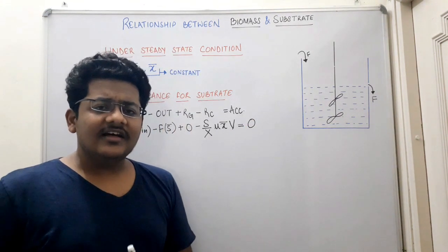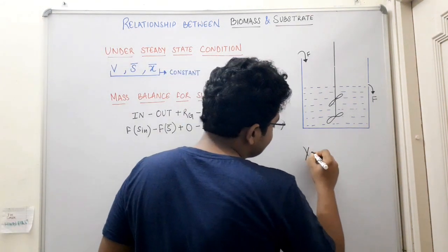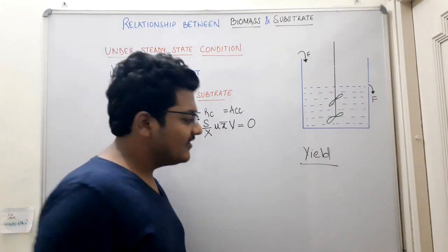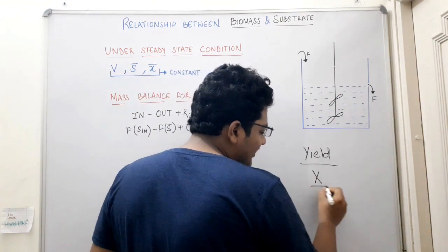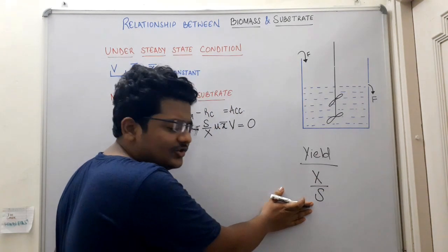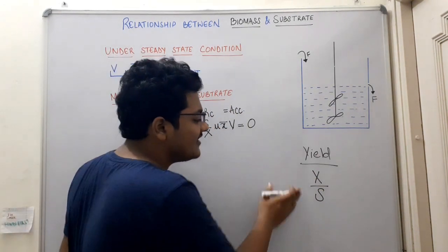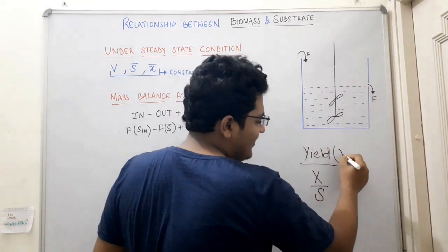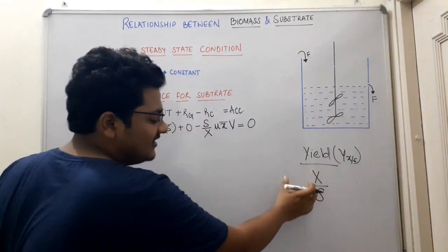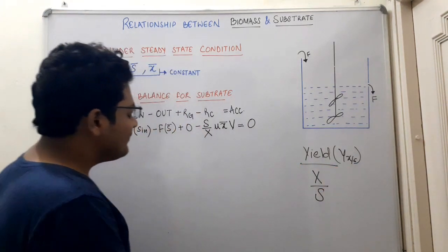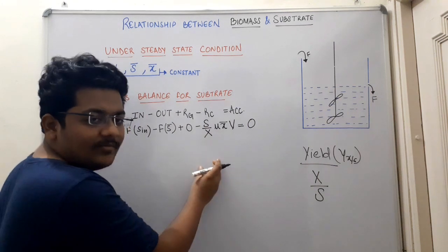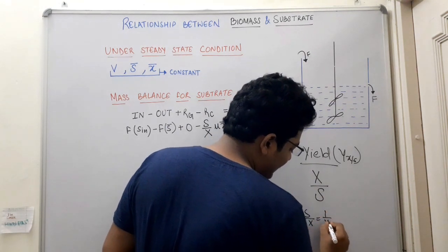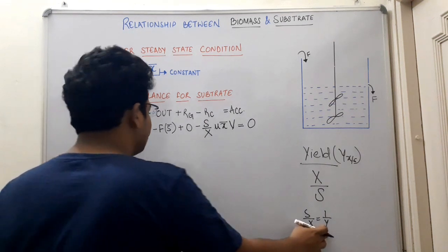One term represents yield. Yield, represented as Yx/s, is biomass produced per unit consumption of substrate — how much biomass was produced per unit substrate consumed. So can we write S/X as 1/yield? Yes, we can write S/X equals 1/Yx/s. We are going to replace the S/X term with 1/Yx/s.